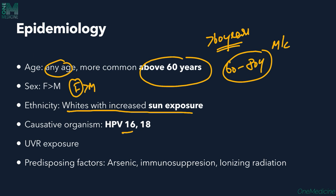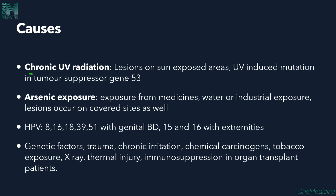The causative organisms involved in the pathogenesis of Bowen's disease are human papillomavirus types 16 and 18. UV exposure also plays an important role in pathogenesis. Other factors include arsenic exposure — either medical or occupational — immunosuppression, and ionizing radiation. UV radiation induces mutation of the tumor suppressor gene p53, which is seen in Bowen's disease. Lesions are mostly seen on sun-exposed sites such as the head and neck region.